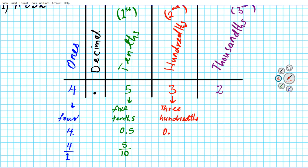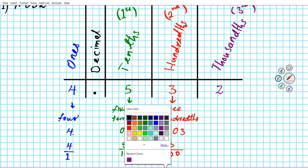Since the 3 is in the second decimal place, we use a filler zero to occupy the tenths (first decimal) place, then put the 3 in the second position: 0.03. This ensures the 3 occupies the second decimal place — the hundredths place. As a fraction, you write it the way you say it: three hundredths is 3 divided by 100.